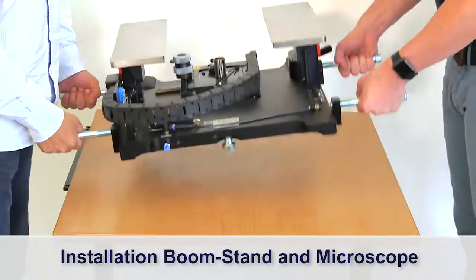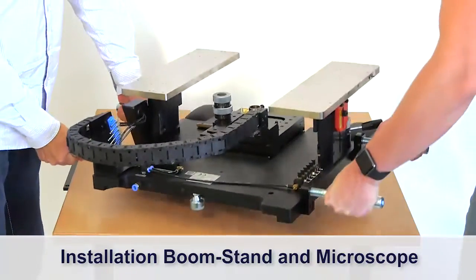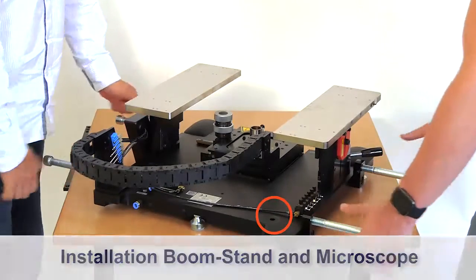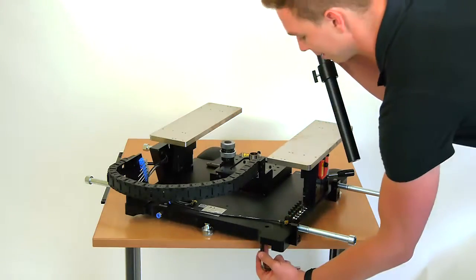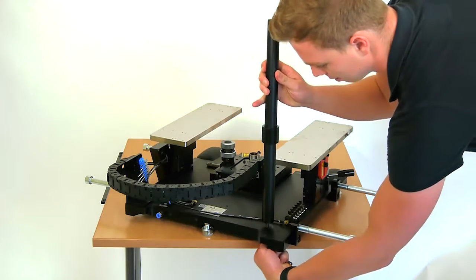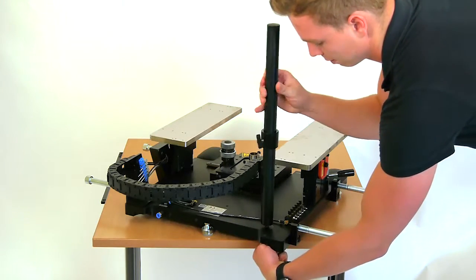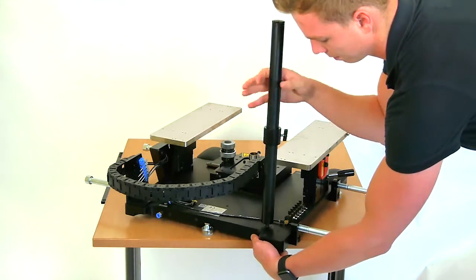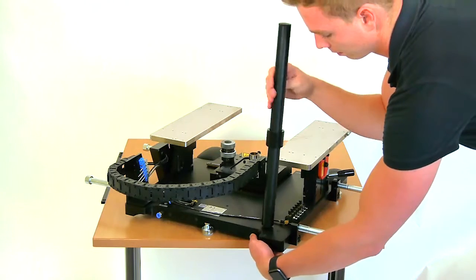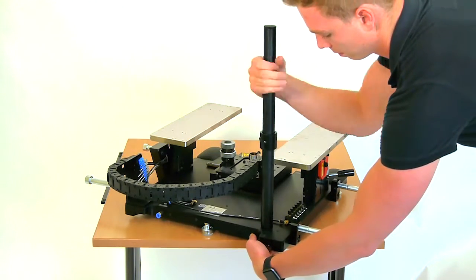Place the station base in a way that you have access to the BoomStand mounting hole. Install the vertical BoomStand post at the rear corner of the base. Please note that the lock screw is accessed from the underside of the base and the BoomStand has only one mounting position on the platen.